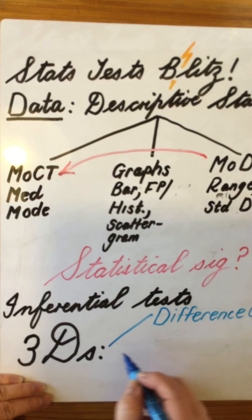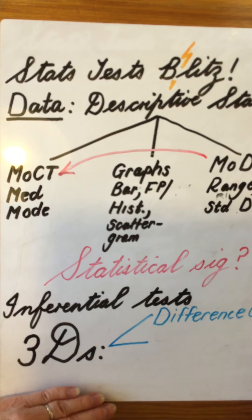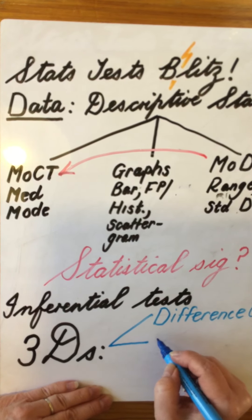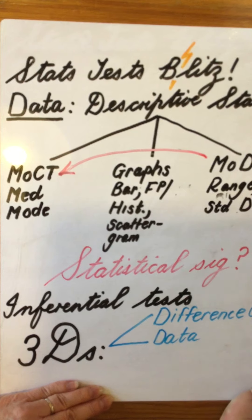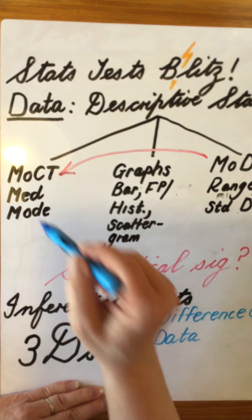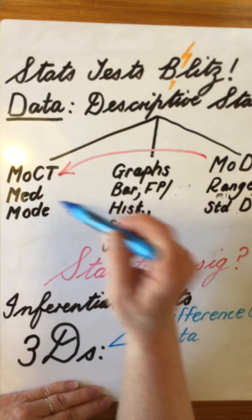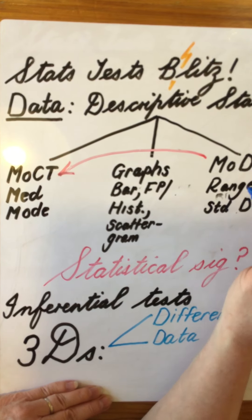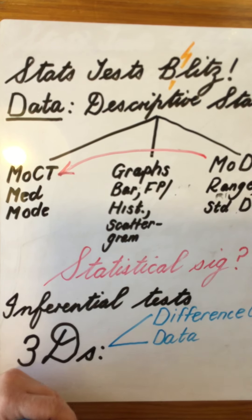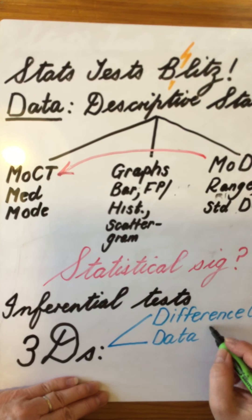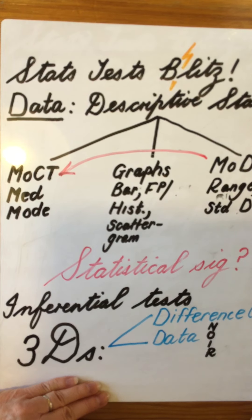So, is it a test of difference or is it a test of a relationship? Next, our second D refers to what kind of data we have. Really important, because as we saw here, you use different measures of central tendency for different kinds of data, different measures of dispersion for different kinds of data as well. So looking at our data, we go back to our old acronym, which is that of NOIR.